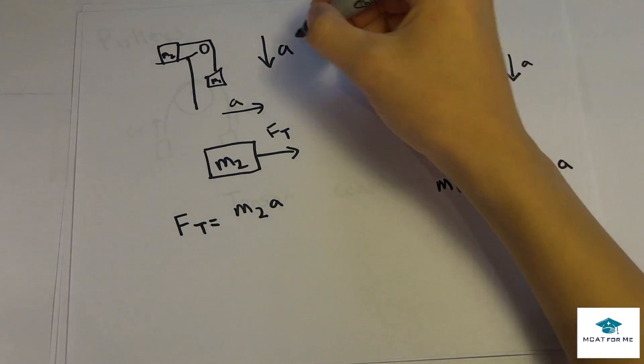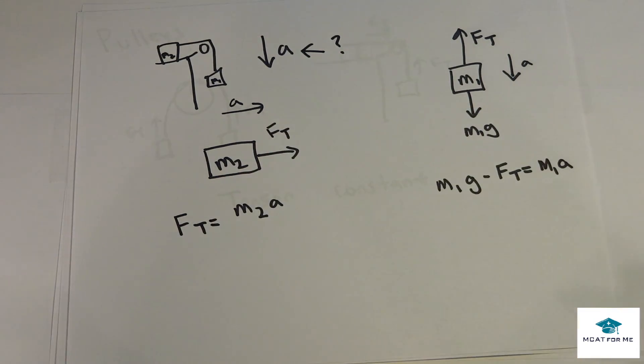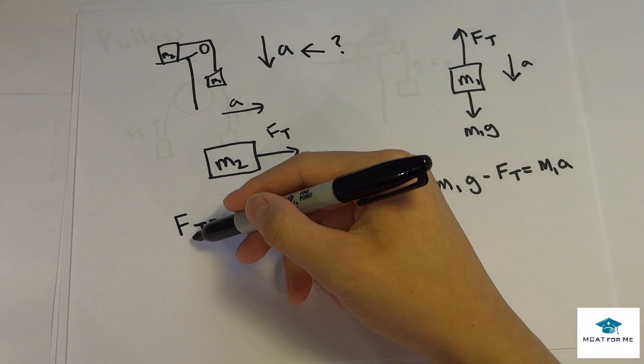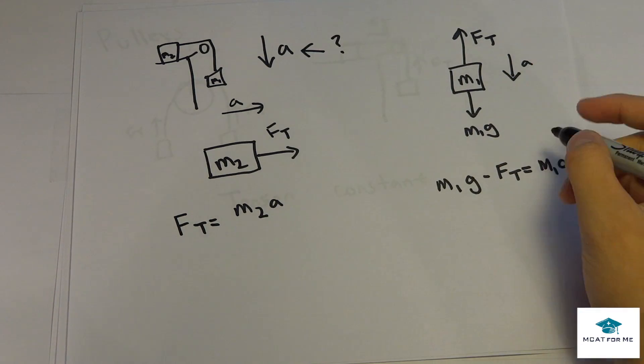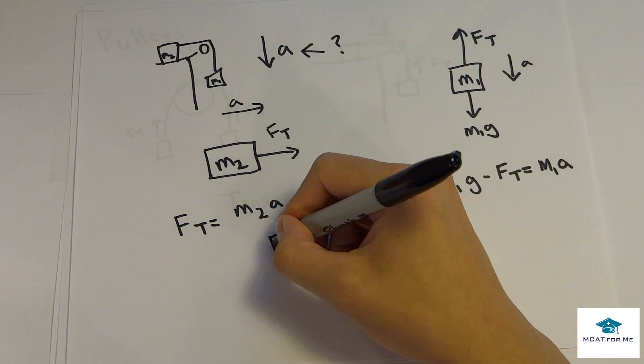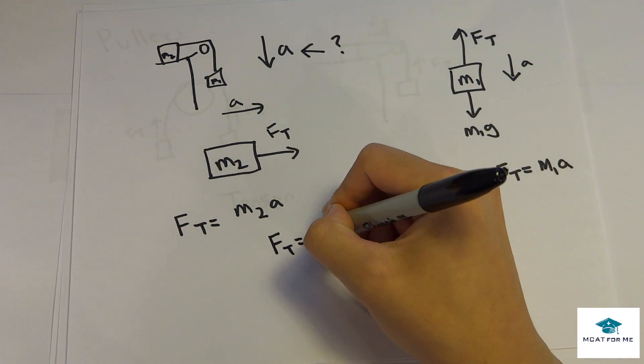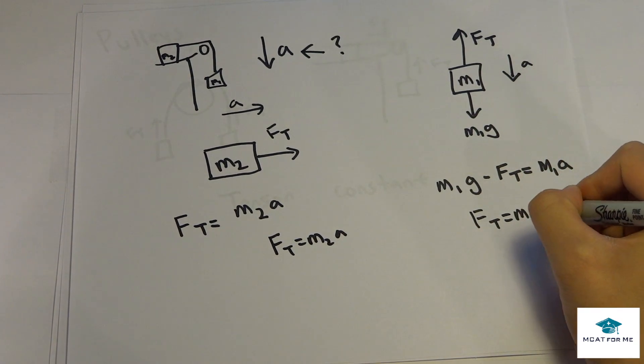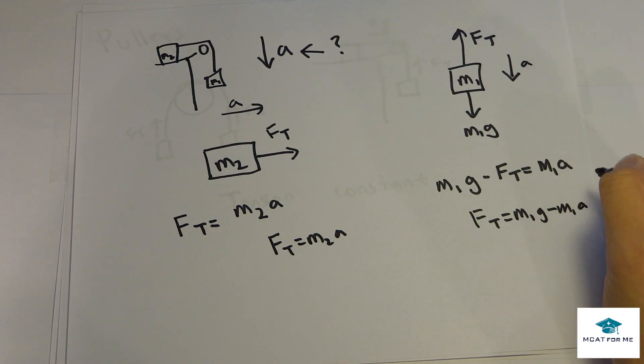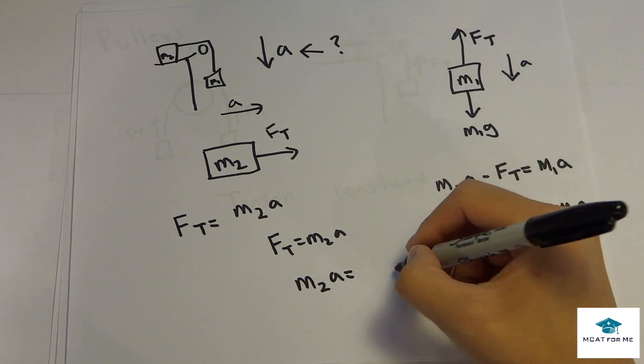So if this question was asking what is the acceleration, we have two equations and two unknowns. That means we can solve it, because right now, f of t is an unknown, a is an unknown, we don't know either one, but all we know are the masses. So what we can do in this case is we say ft is mass 2 times a, so that's fine. And in this case, ft equals M1g minus M1a.